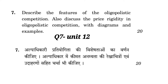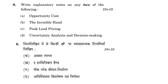Question number seven: Describe the features of oligopolistic competition. Also discuss the price rigidity in oligopolistic competition with diagrams and examples. Alpa adhikari pratiyogita ki vishishtao ka varnan kijiye. Alpa adhikar mein keemat anmiyata ki rekha chitron evam udaharanon sahit charcha bhi kijiye. Seventh question hai jo Unit number 12 mein milega — Pricing under Monopolistic and Oligopolistic Competition. Iske andar pura yeh topic aapko milega, jiske andar price rigidity bhi di hui hai, aur uske andar aapko demand curve banakar dikhana hai, saath mein example bhi dena hai.